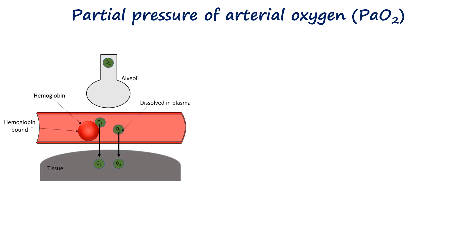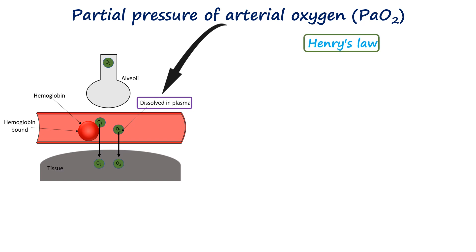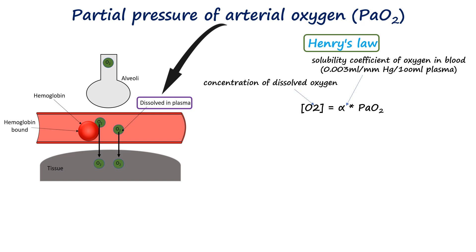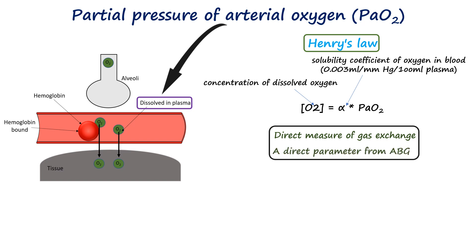PaO2 measures the amount of oxygen dissolved in the blood plasma and not bound to hemoglobin. The amount of oxygen dissolved in blood is determined by Henry's law, which states that the concentration of a dissolved gas in a liquid is directly proportional to the partial pressure of that gas above the liquid. It is a direct measure of how well the lungs transfer oxygen from the air into the blood, and reveals problems in gas exchange.